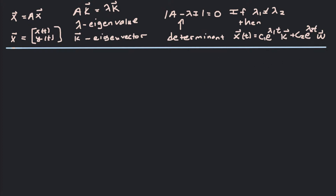Hey guys, what's up? Today we're going to be looking at a system of differential equations — specifically, distinct real eigenvalues for that system. The linear system of differential equations we want to solve is x prime equals Ax, where A is some matrix and x is a vector of functions.